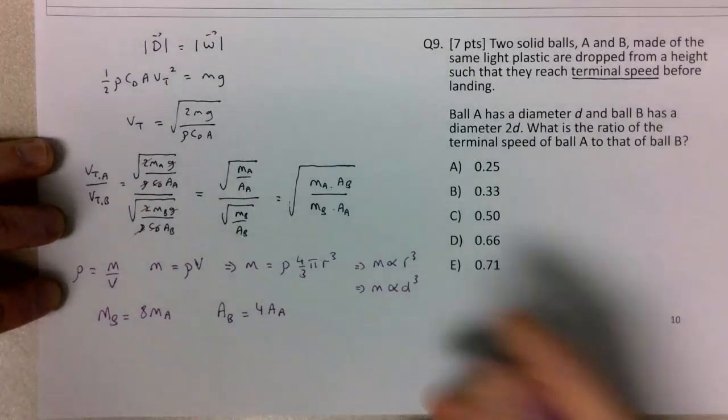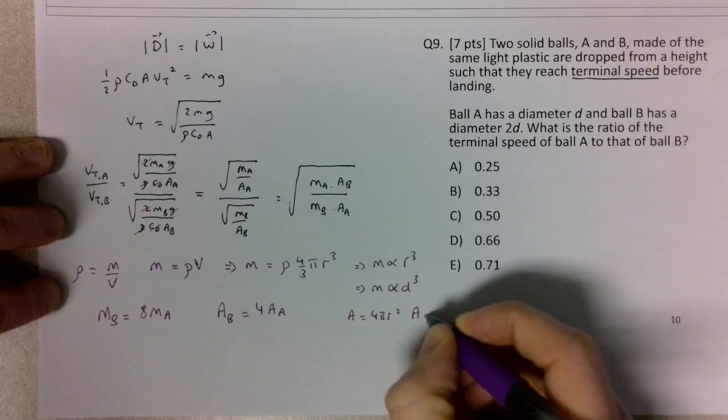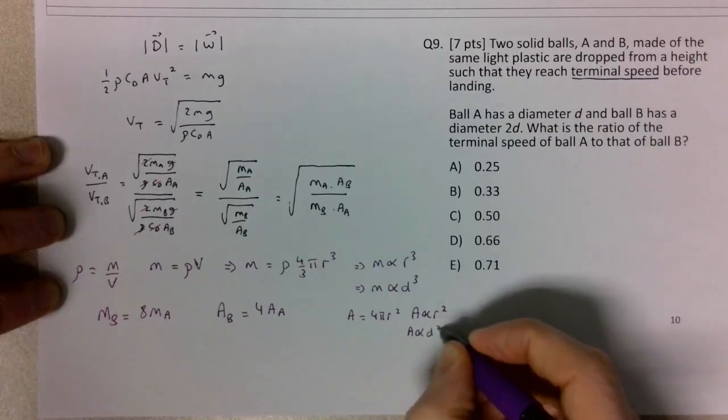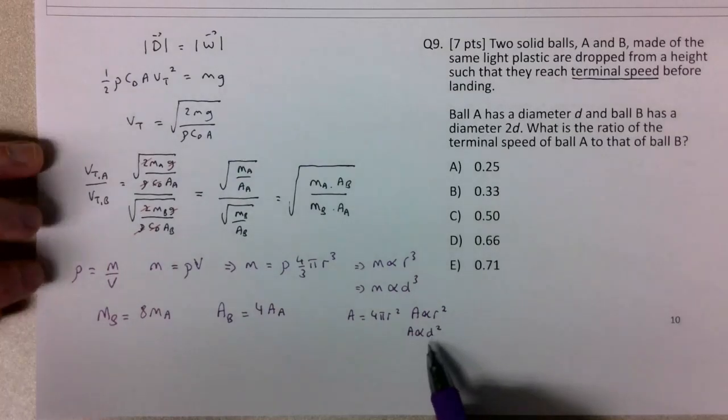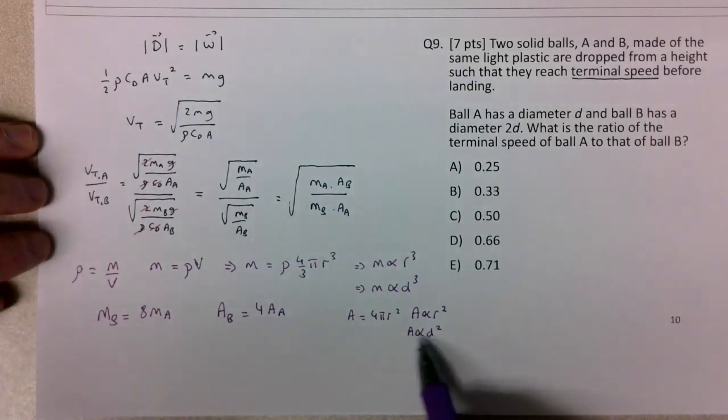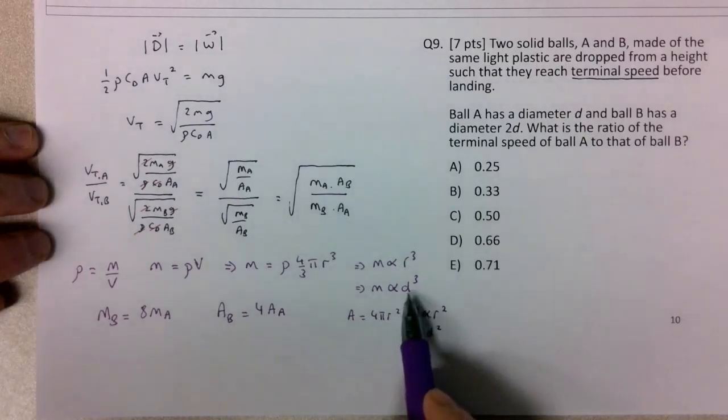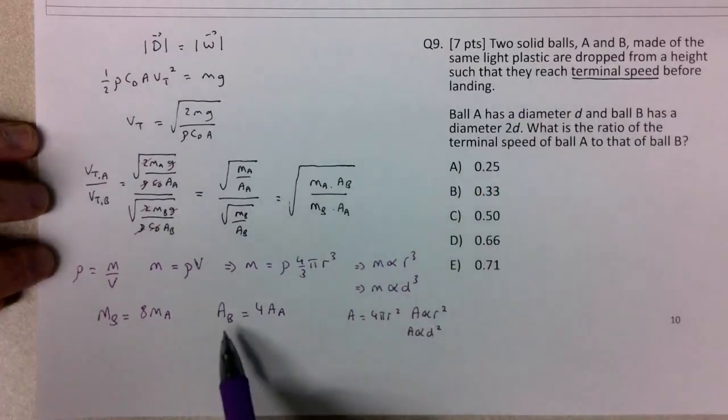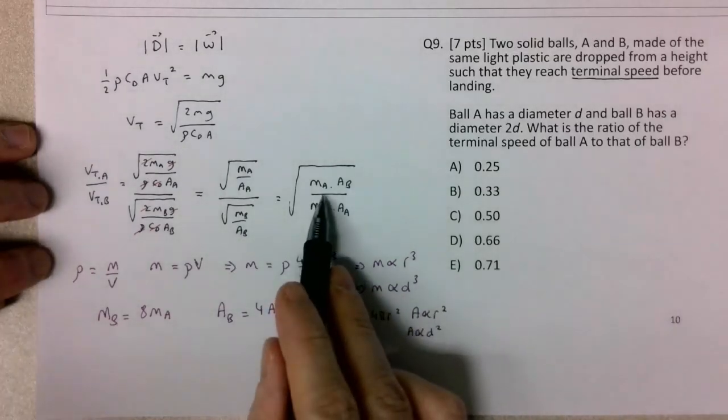The area of B will be 4 times the area of A. The area is π r², so area is proportional to r², which also means A is proportional to d². Since d and r are related linearly, if I double the diameter, I get 4 times the cross-sectional area. And if I double the diameter for a solid object where the density is constant, I get 8 times the mass. Now we can go back to our equation to solve for this ratio.